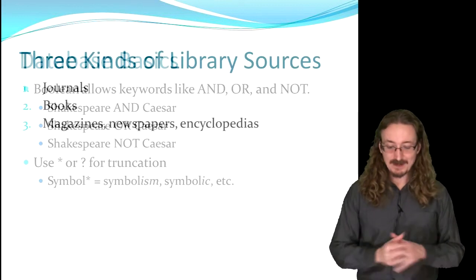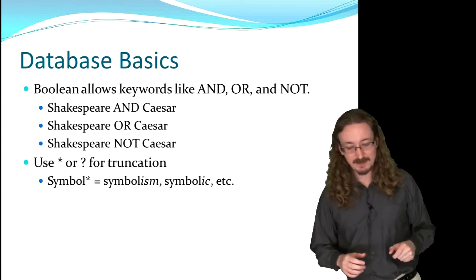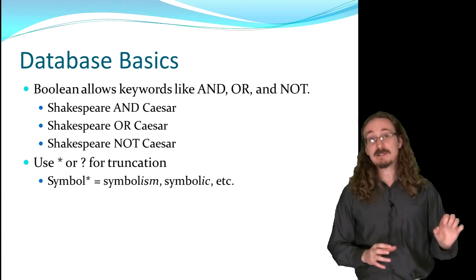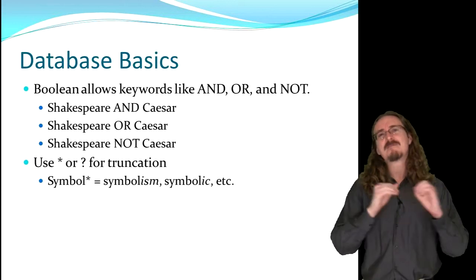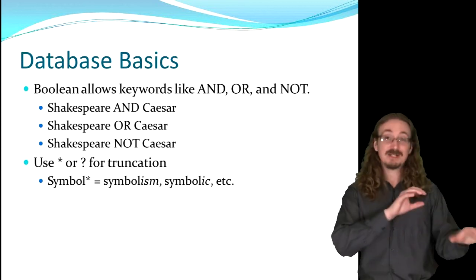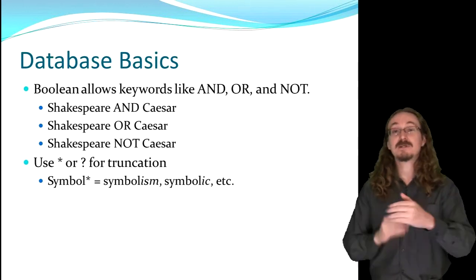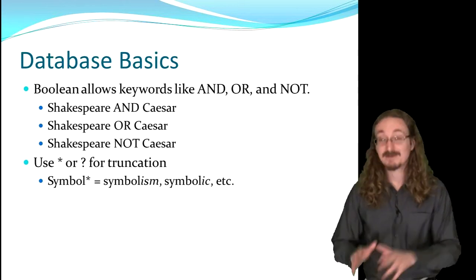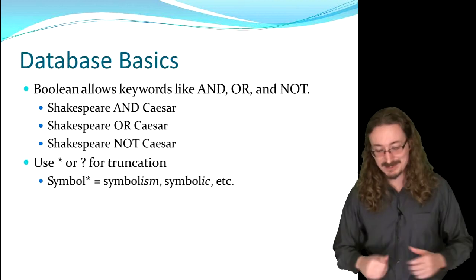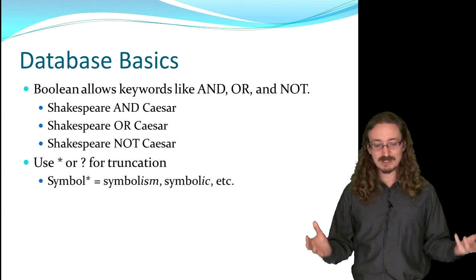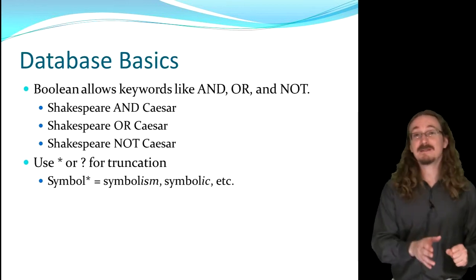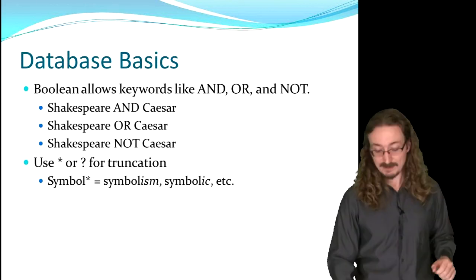Before getting into the databases, here's an overview of the tools available. The most basic and important is the Boolean search. When you search in the library, you type in keywords. 'Shakespeare AND Caesar' gives you every article containing both. 'Shakespeare OR Caesar' gives a bigger set — everything with either term. 'Shakespeare NOT Caesar' gives you everything about Shakespeare that doesn't mention Caesar. There's also the truncation tool, usually an asterisk or question mark — typing 'symbol*' returns symbolism, symbolic, and so on.